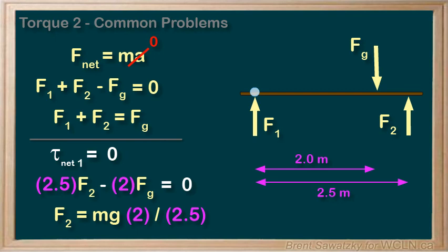Now to solve for the force applied by the other worker, we have two options. One is we can go back to the force equation that we made here and substitute in f2 and solve for f1. Or we could do another torque equation. But this time, we would set the pivot point here to eliminate f2 from our equation.